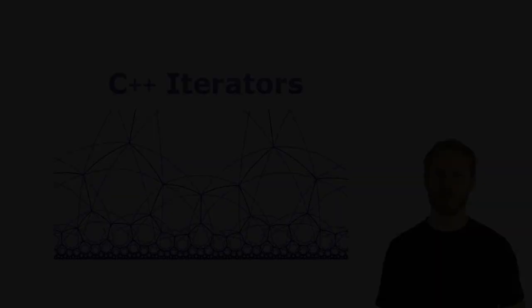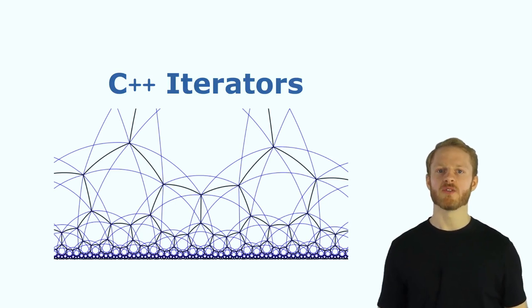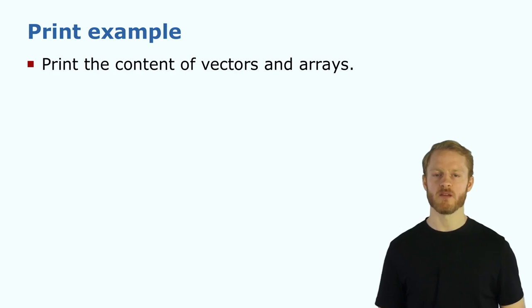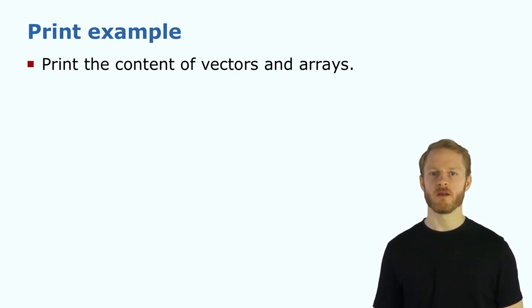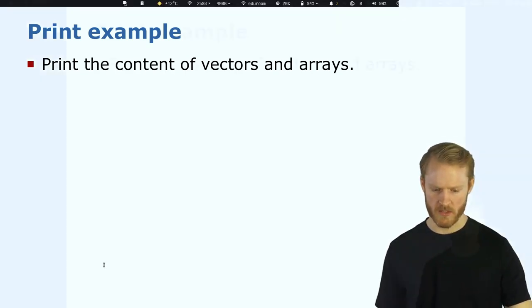We'll now move into iterators, which are the way we use algorithms in a generic way. For example, if we want to create a print function to print the content of different types of data — vectors and arrays — let's do it together.